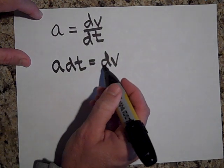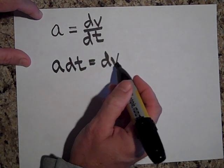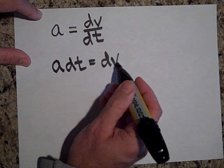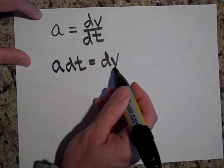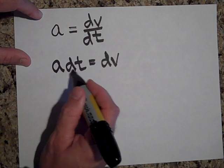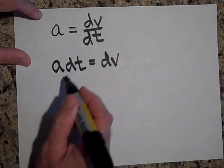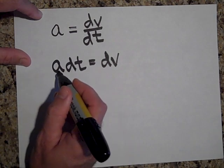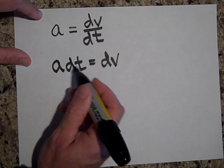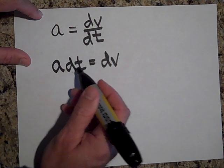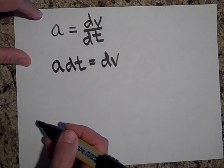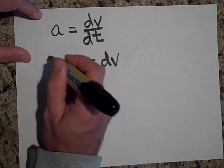Here's how to interpret this: dv is a very tiny change in velocity. When do you get a very tiny change in velocity? When you have an acceleration for a very tiny time — if you only let something accelerate for an infinitesimally small time, you get a very tiny change in velocity.